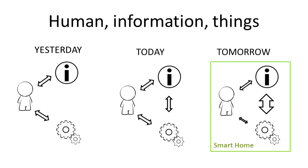where the user gets information from the world around, makes some decisions and takes actions on devices he has. In case of a heating system, he is changing the temperature when it's getting cold. The next step is automation, where devices can get information from the outside and change their operational mode accordingly.